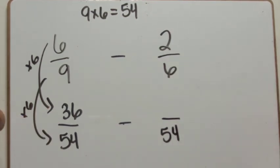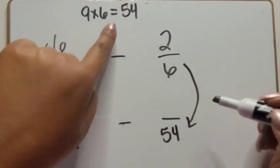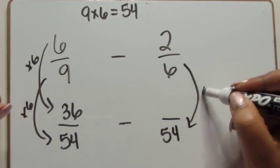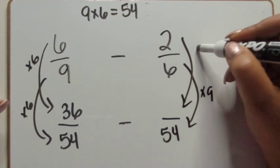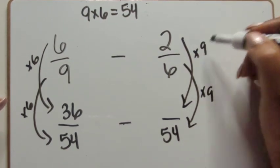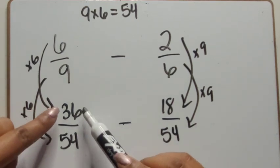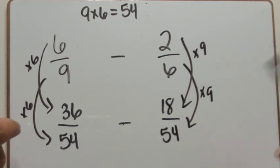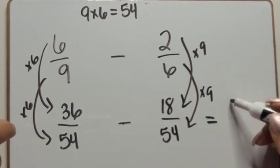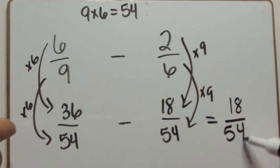For two-sixths: six times nine is fifty-four, so two times nine is eighteen. Our denominators are the same now. We can take thirty-six fifty-fourths minus eighteen fifty-fourths, and we get eighteen fifty-fourths.